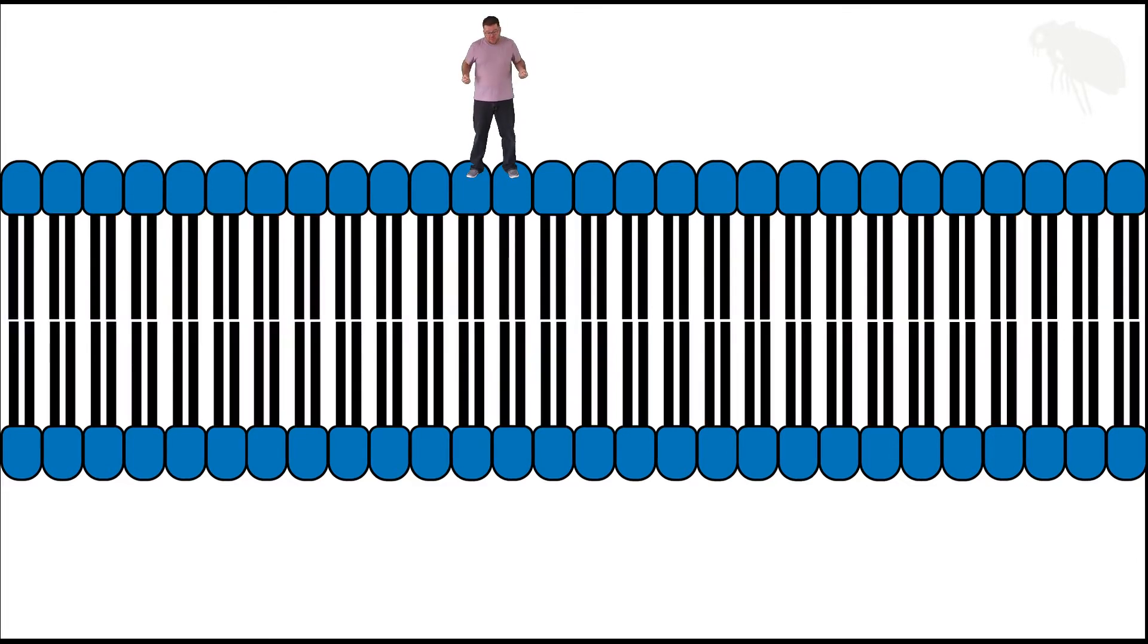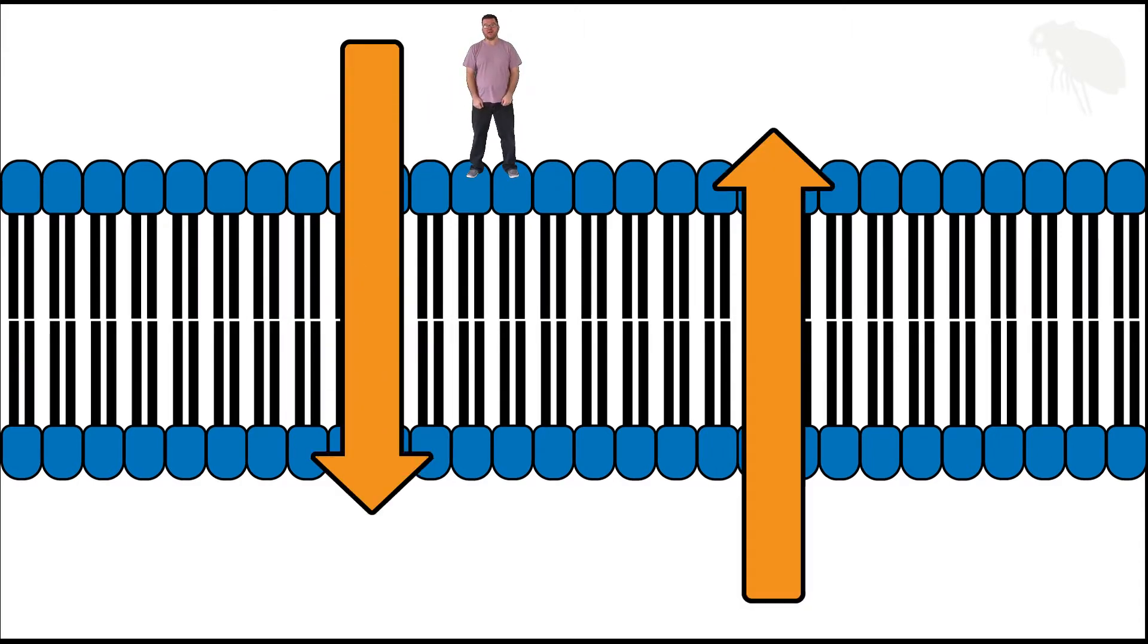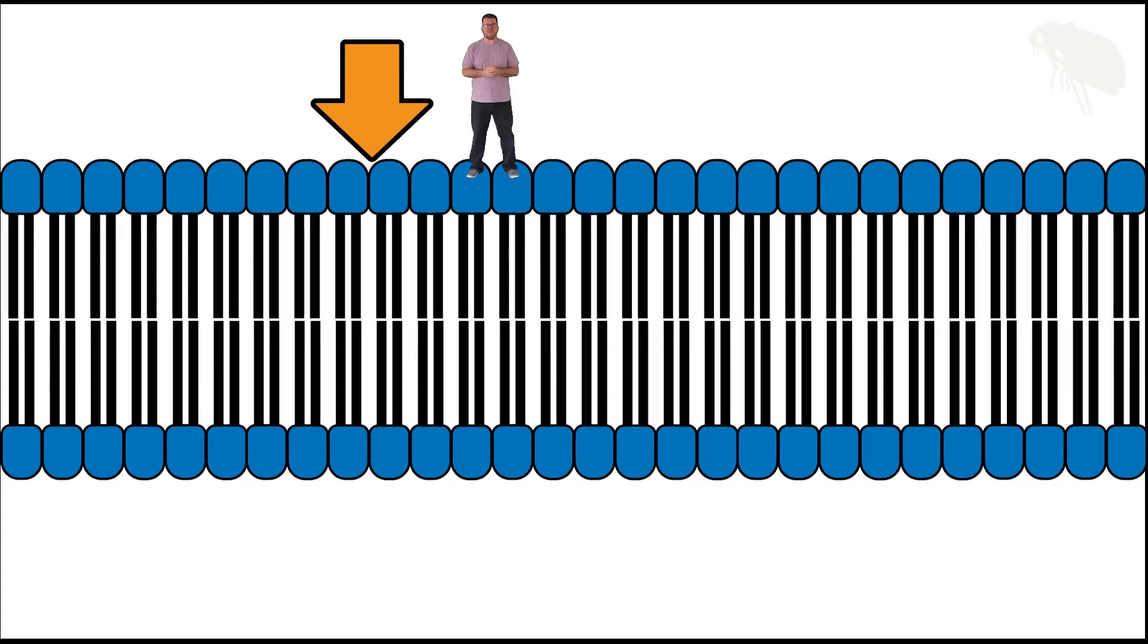The simplest way to do it would be just to go through this lipid bilayer and substances that are hydrophobic can do that. But the majority of substances that interact with cells or that cells produce or that cells need are ionic or hydrophilic in nature. Those kinds of substances can't pass through the membrane.